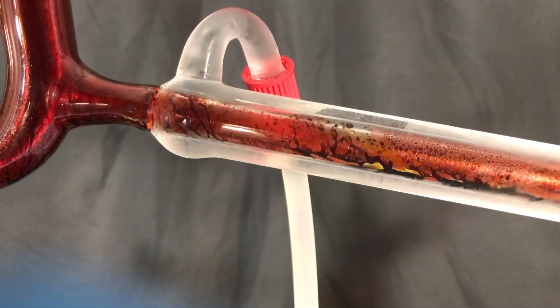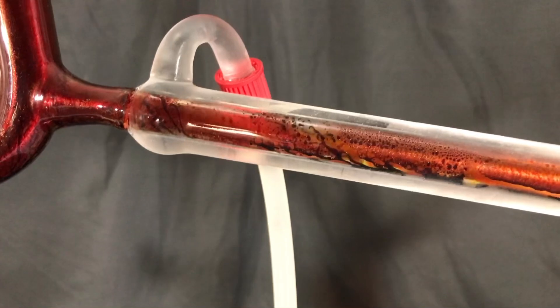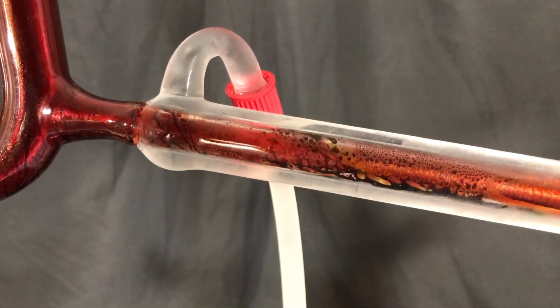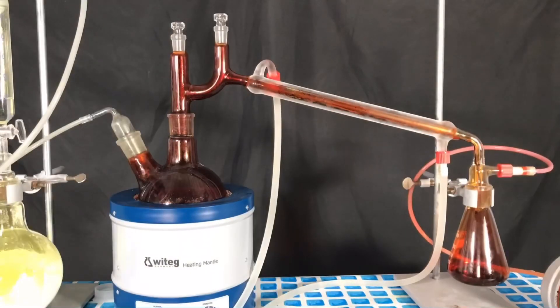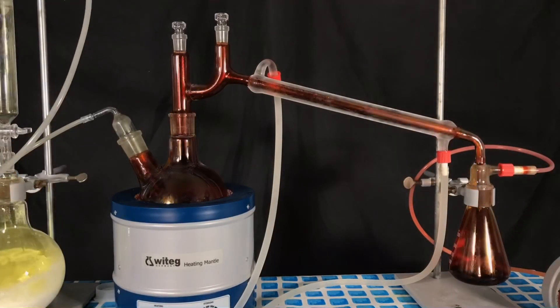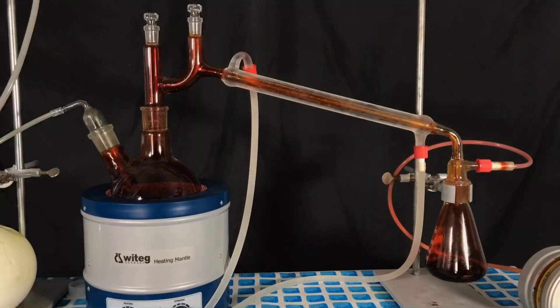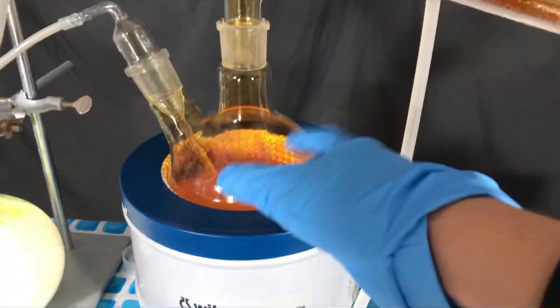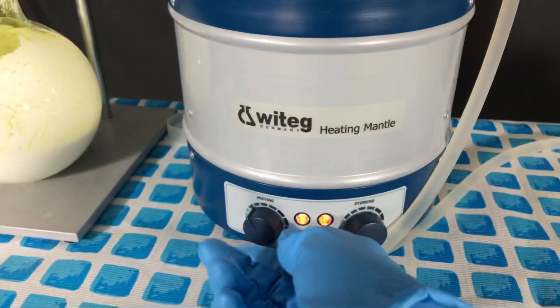This is real time footage of bromine condensing. The entire distillation turned out to take shorter than expected. I expected it to take around 1 hour but it only took 30 minutes. When the thick brown bromine vapors disappeared the heating mantle was turned off.